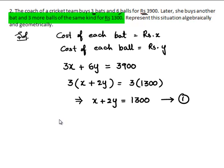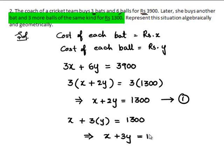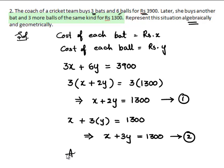Using the second condition, the cost of 1 bat is Rs. X and the cost of 3 balls is 3Y. This is equal to the total cost of Rs. 1300, so we write X + 3Y = 1300. Equations 1 and 2 represent the given situation algebraically.